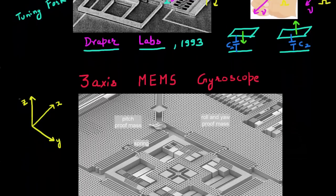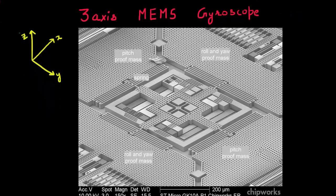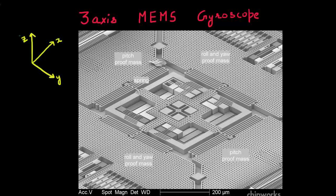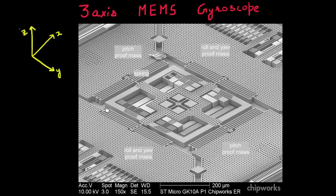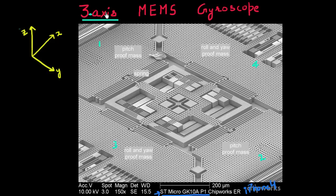The second example I have is a more recent one. This is in fact the gyroscope which goes inside one of the iPhones — this is the ST Microelectronics based gyroscope found inside an iPhone. What it consists of here is four of these proof masses. I can see four of these proof masses: one is this one, the second one is over here, the third one is over here, and the fourth one is over here. It's able to use these four proof masses to measure the angular rotation along all three axes.